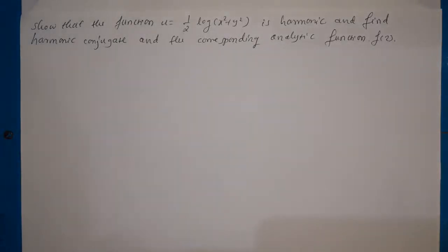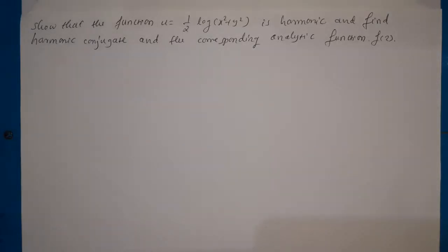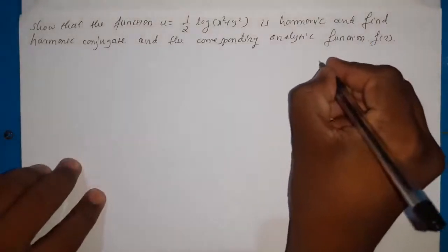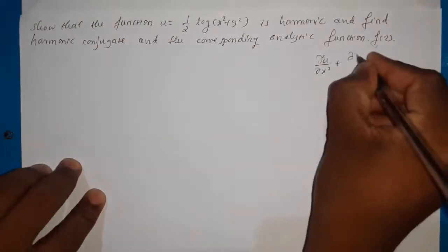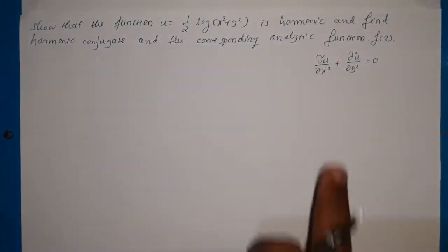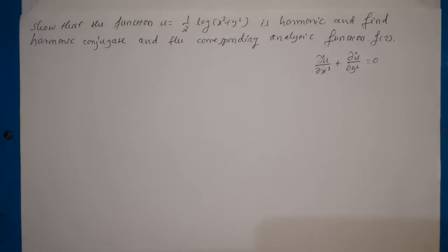Here the real part of the analytic function is given, and we need to find its harmonic conjugate — the imaginary part — and also the analytic function in terms of z. First, let us show that u is harmonic. To verify it is harmonic, we should satisfy the Laplace equation: ∂²u/∂x² + ∂²u/∂y² = 0. If this equation is satisfied, then we can say the function is harmonic.